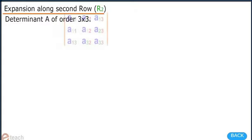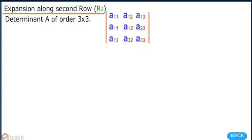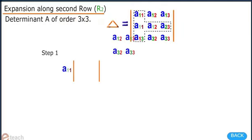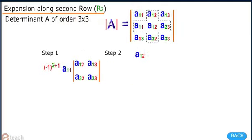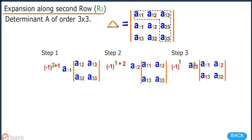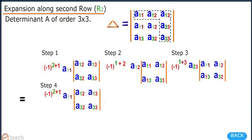Expansion along second row R2: this can also be done in the same way as we expanded the determinant along first row R1.